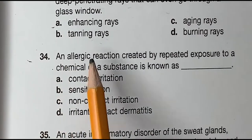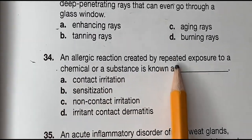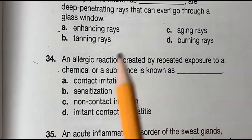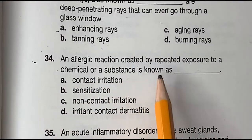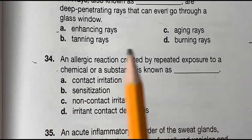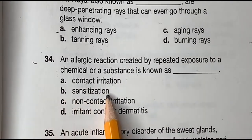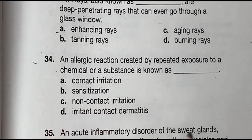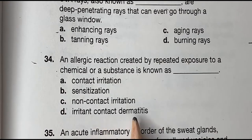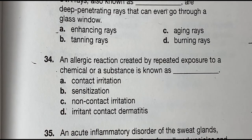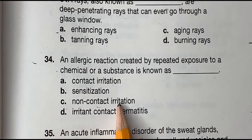Question 34: An allergic reaction created by repeated exposure to a chemical or substance is known as blank. Is it A, contact irritation. B, sensitization. C, non-contact irritation. Or D, irritant contact dermatitis. And the correct answer is C, non-contact irritation.